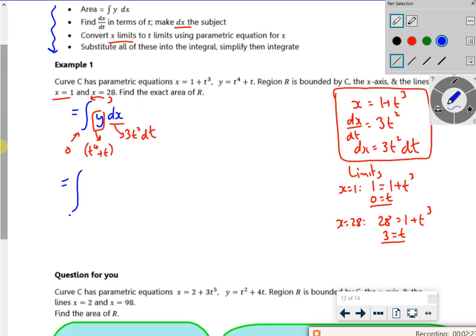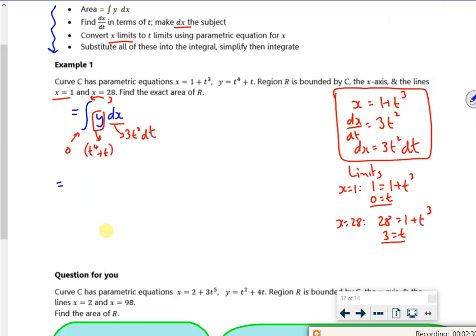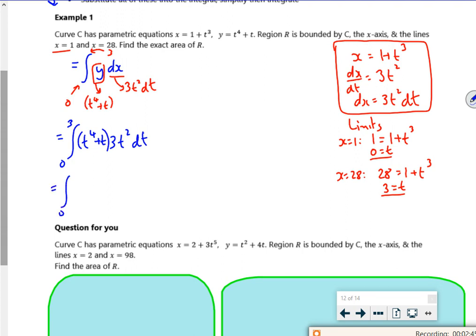So it's now 0 to 3. 0 to 3, t to the 4 plus t, which is the y we raised, and 3t squared. If I just take the 3t squared through, I've got 3t to the 6, 3t cubed.